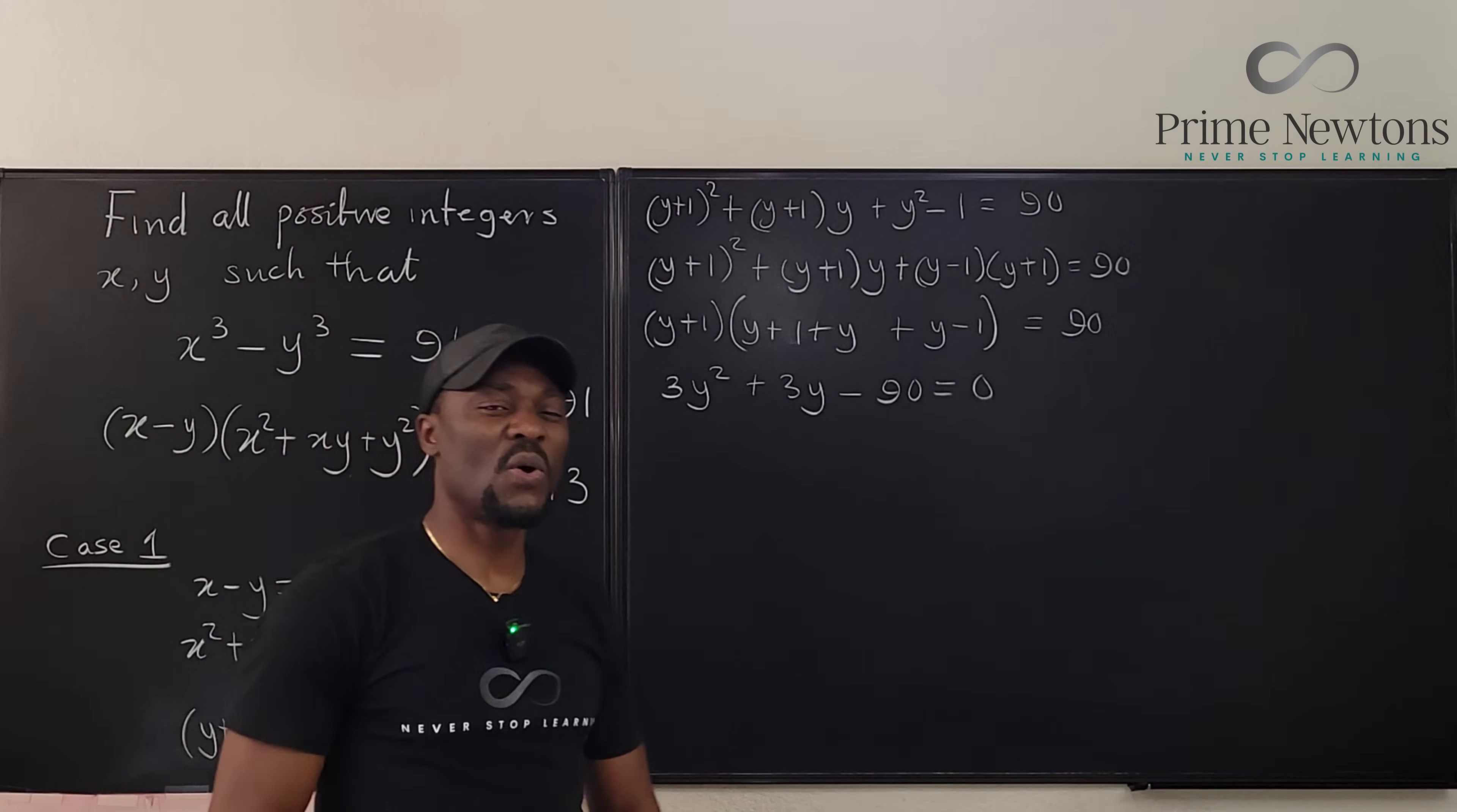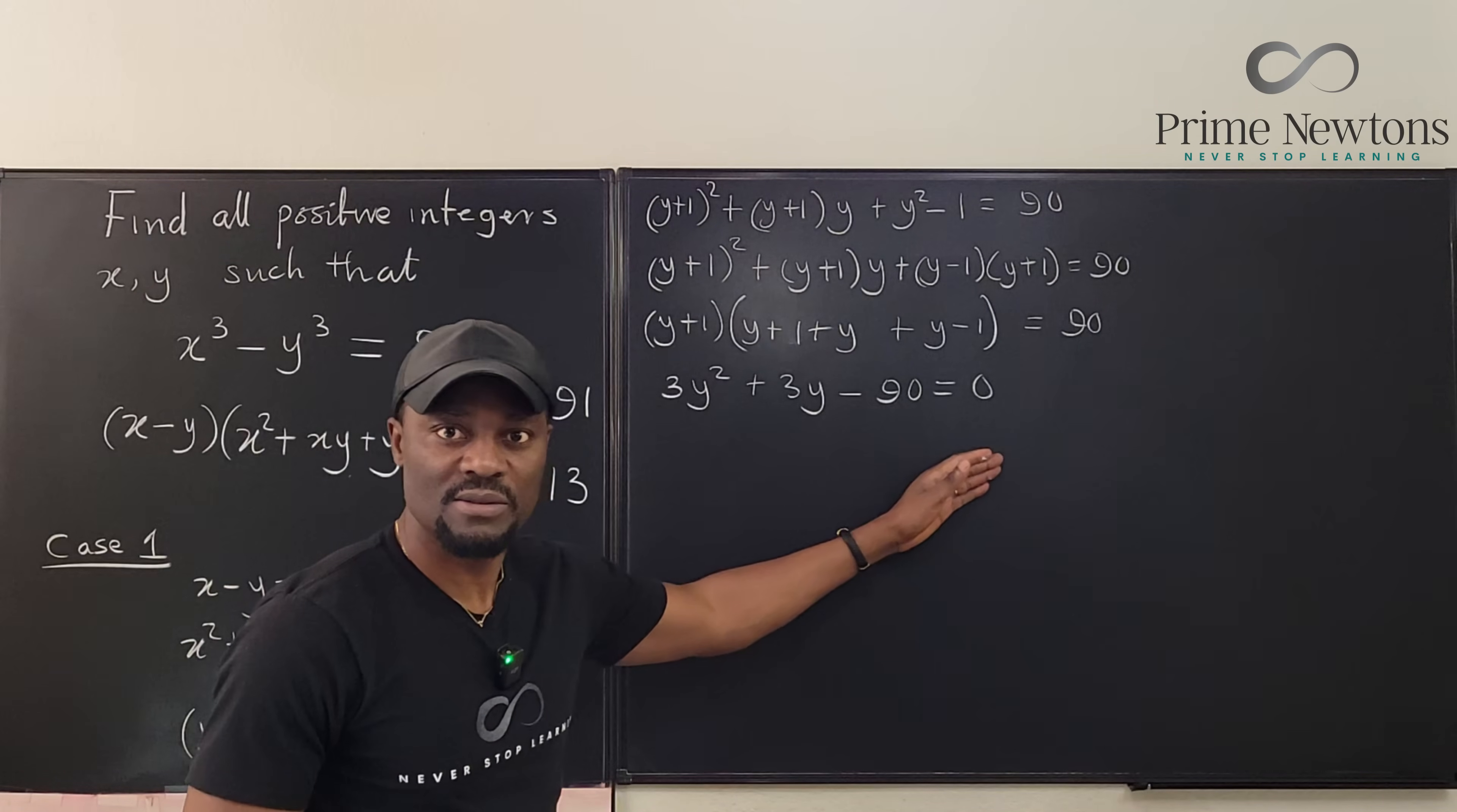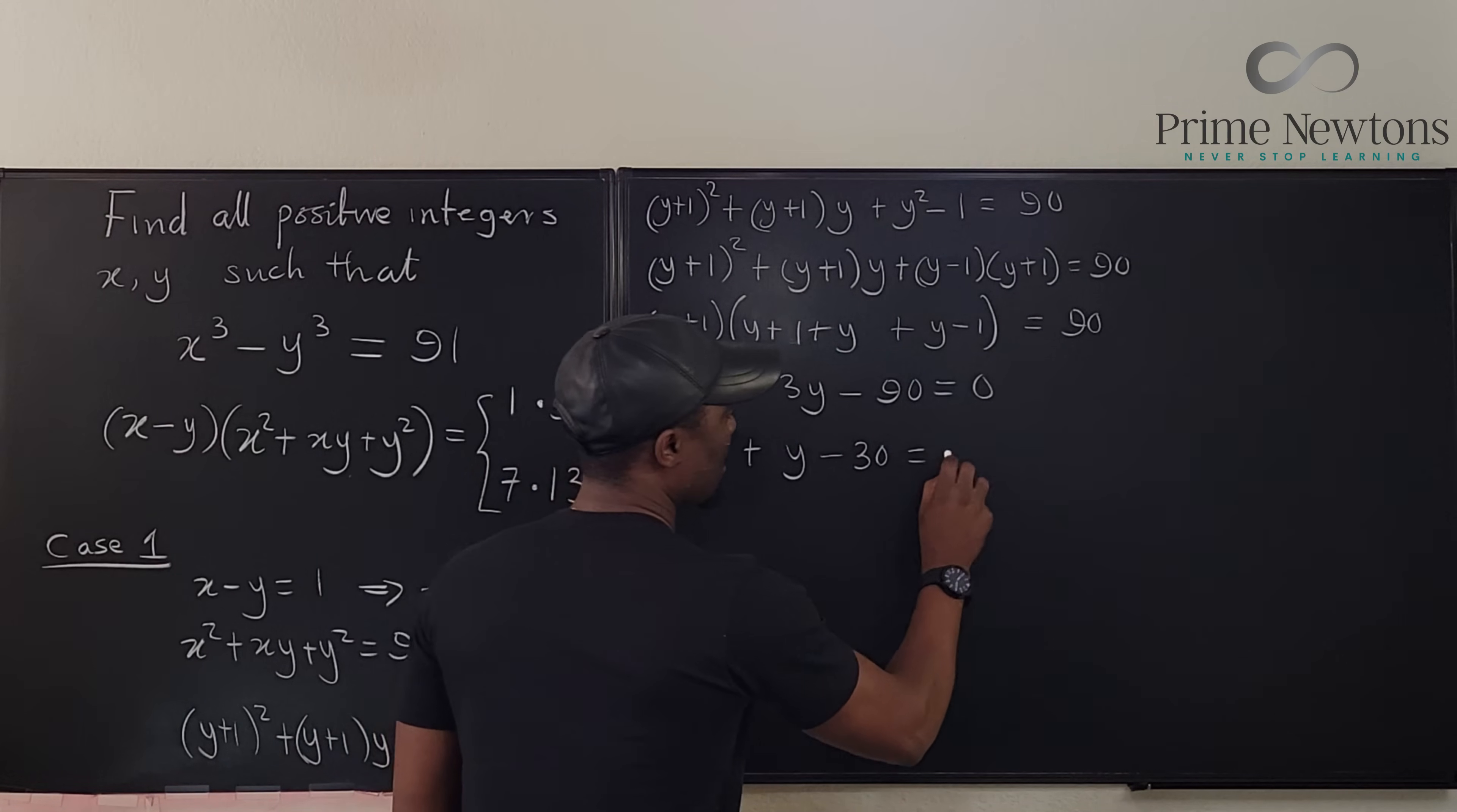Maybe I took the long way. I could have just expanded this and collected like terms. I don't think it was the long way. It doesn't matter. So here we are. And every term is divisible by 3. So I can get rid of the 3s. So I have y squared plus y minus 30 equals 0.